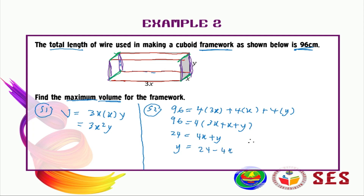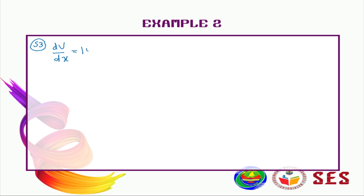Now substituting y into our volume equation, V equals 3x squared times (24 minus 4x). Expanding this gives V equals 72x squared minus 12x cubed. For the third step, differentiate volume with respect to x: dV/dx equals 144x minus 36x squared.